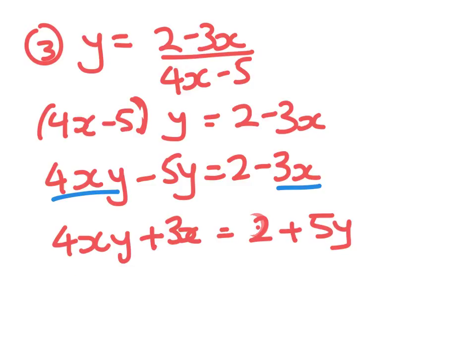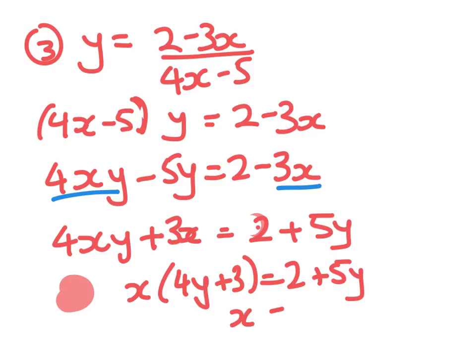Factorizing, we've got x, and then we've got 4y plus 3 equals 2 plus 5y. Hopefully, you're starting to see that these are actually really quite straightforward once you've done a few. So there we go. We've got x equals 2 plus 5y, and we divide by 4y plus 3.